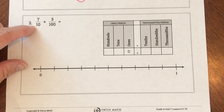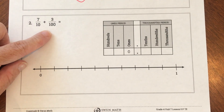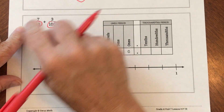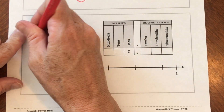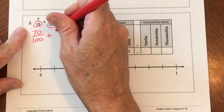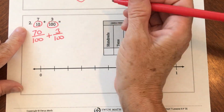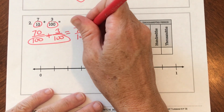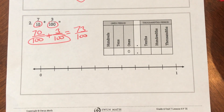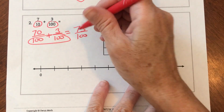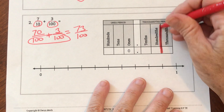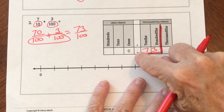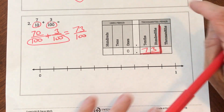This one says seven tenths plus three one-hundredths. I can't add these because they have different denominators, but I know seven tenths is the same as seventy one-hundredths. So seventy one-hundredths plus three one-hundredths — now they have the same denominator. I can add them and get seventy-three one-hundredths. Because this is hundredths, we're going to write it to the hundredths place. So it's going to be 0.73 — seventy-three hundredths.